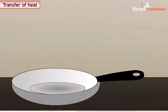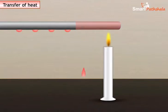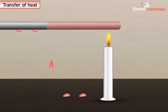Now let us know how heat flows by performing an activity. Take an iron rod. Fix a few small wax pieces at equal distances on the rod. Clamp the rod to a stand. Now heat one end of the rod. After some time, we can observe the wax piece nearest to the flame falling off, followed by the next wax piece.